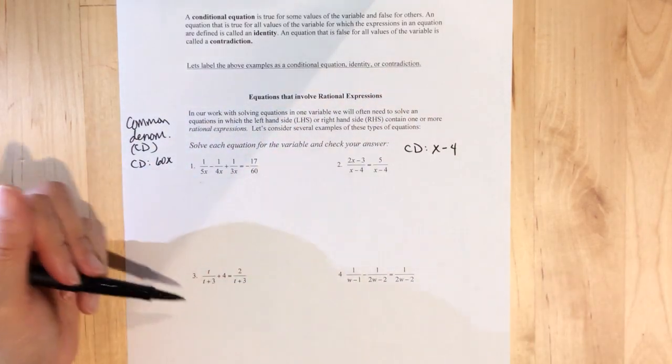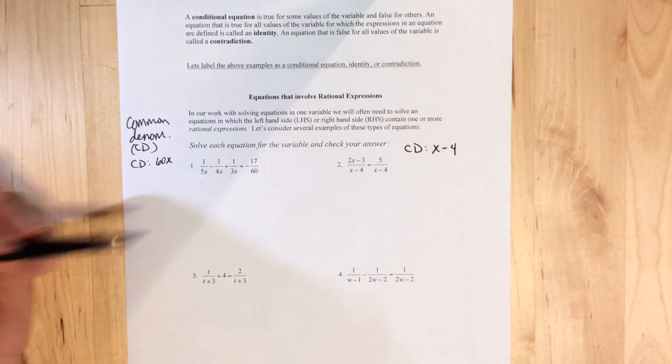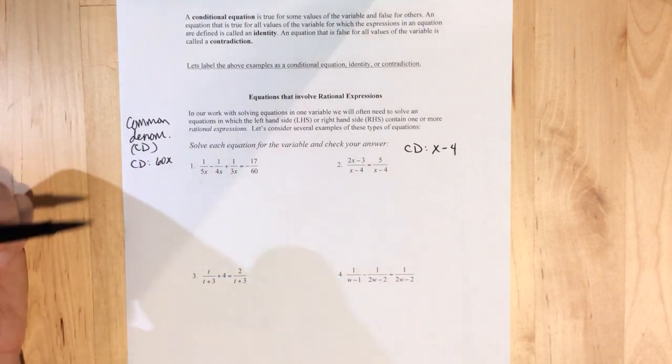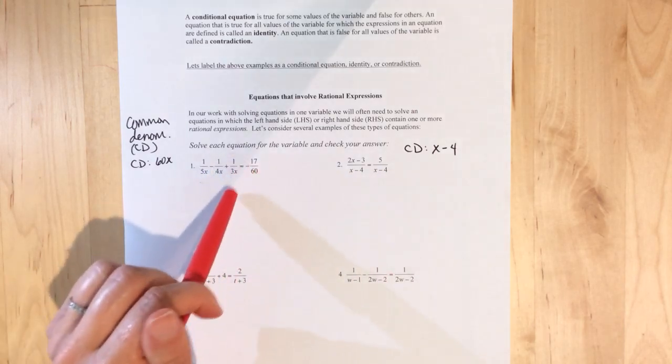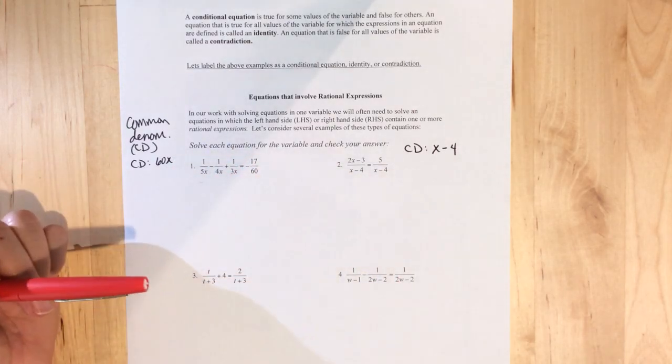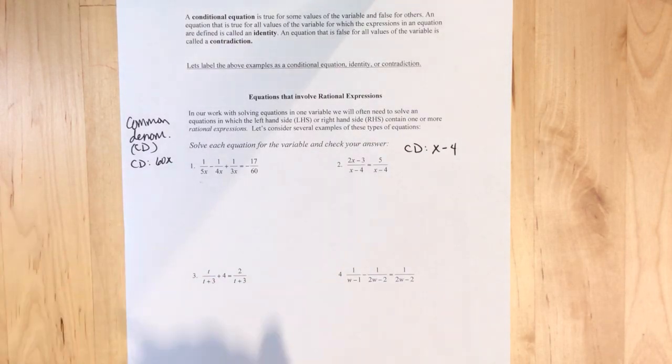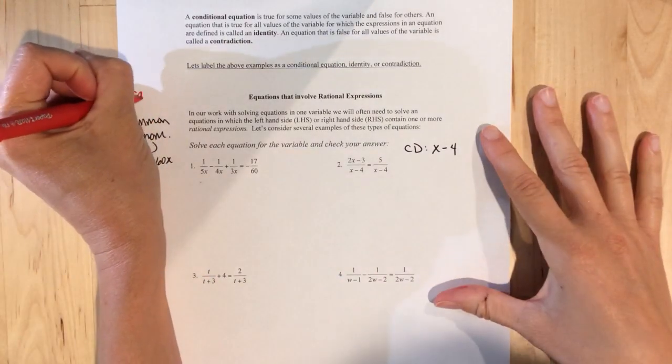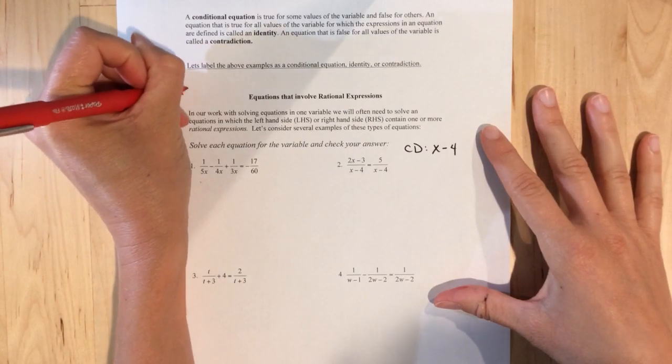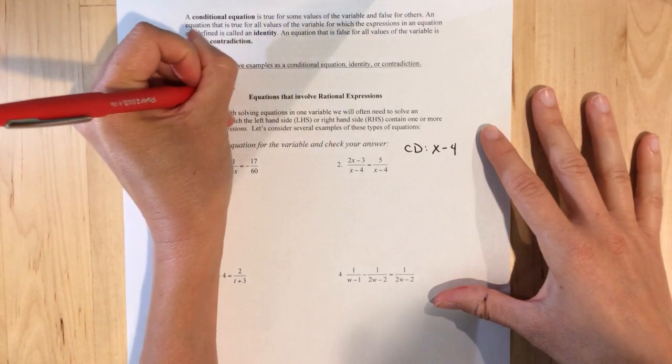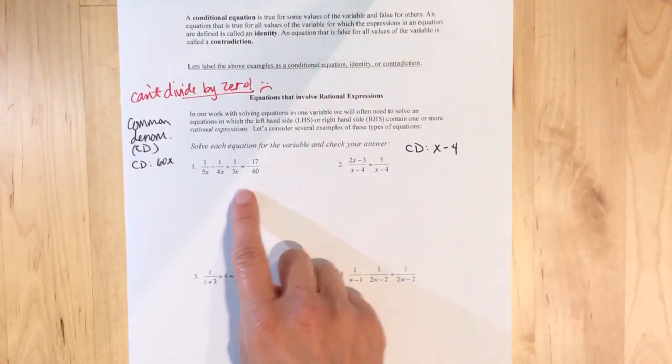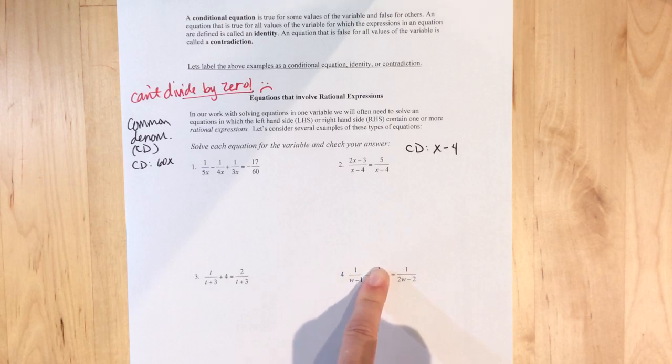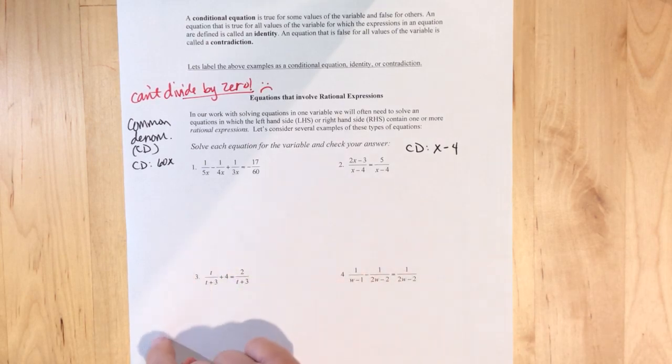But with one and four, three and four, what I like to do is leave myself little breadcrumbs because remember, what's the one number we can never, ever, ever divide by? Zero, right? Can't divide by zero. So with all of these, before I start, because I know myself, I leave myself what I'm calling little breadcrumbs so that I know that when I get to the end,